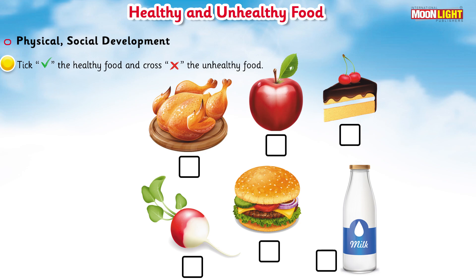You can see here there are some foods, and there are some blocks below each food for marking. Now take out two colors — one is green and the other is red. We will mark the tick with green and we will mark the cross with red color. The first food is chicken.